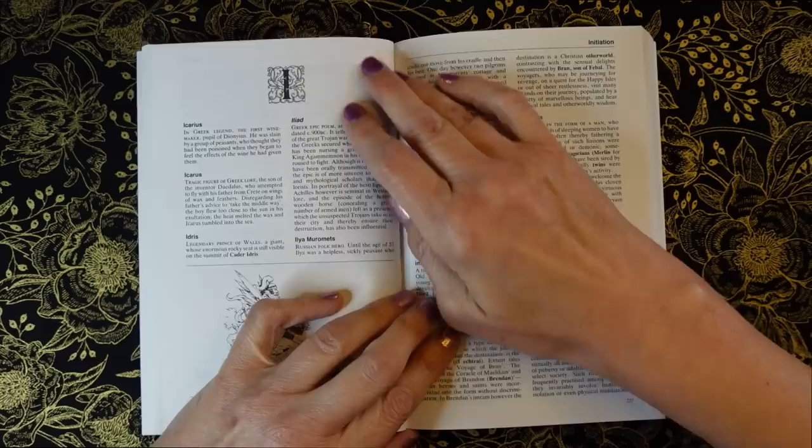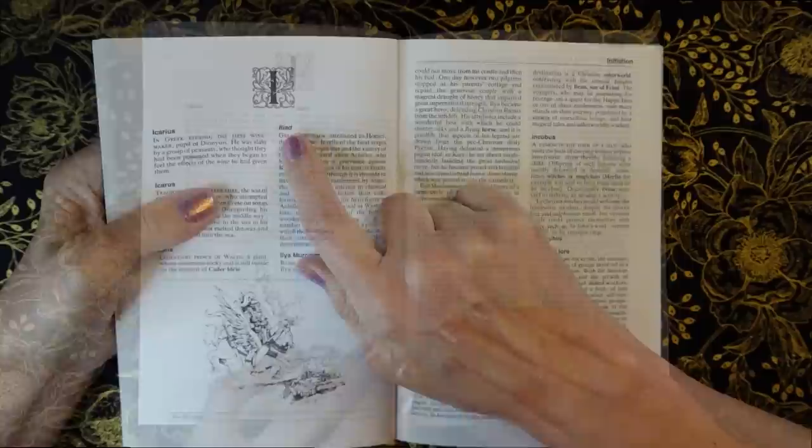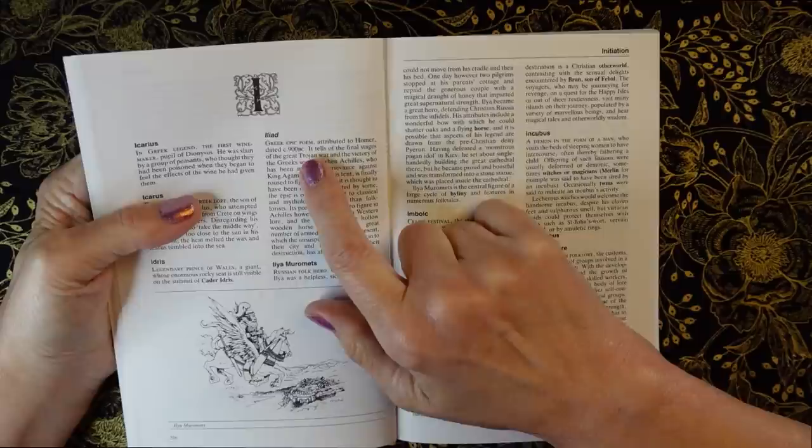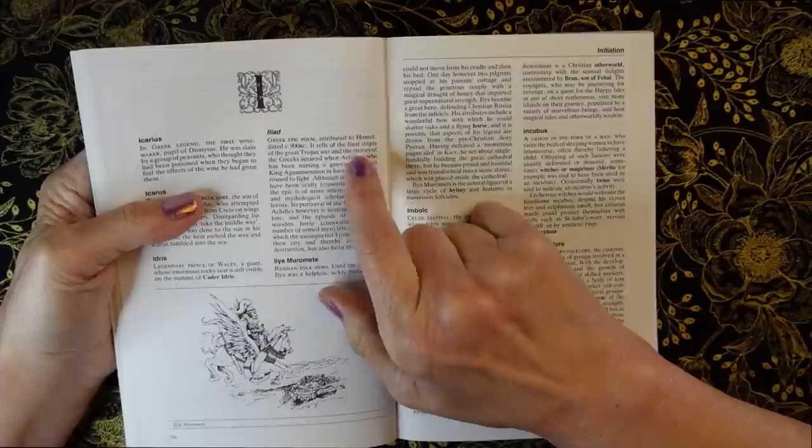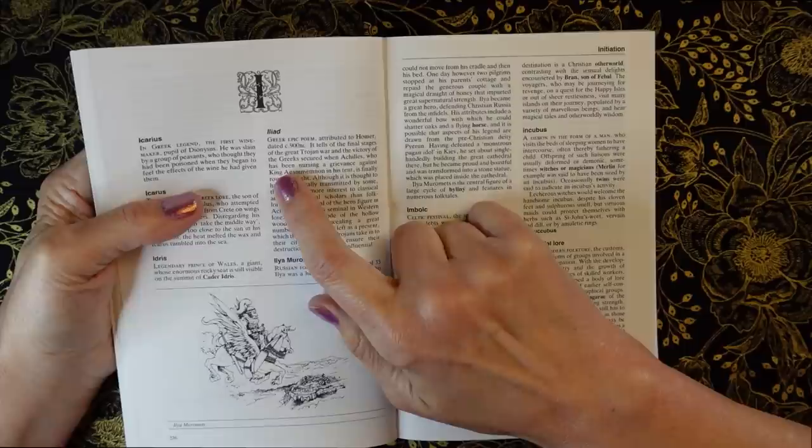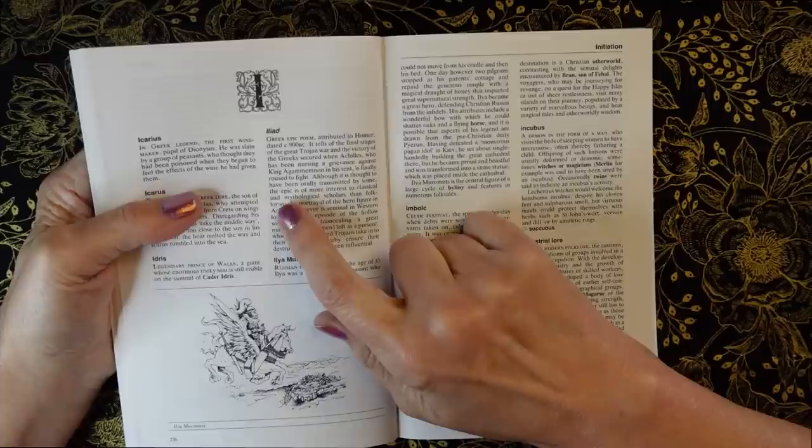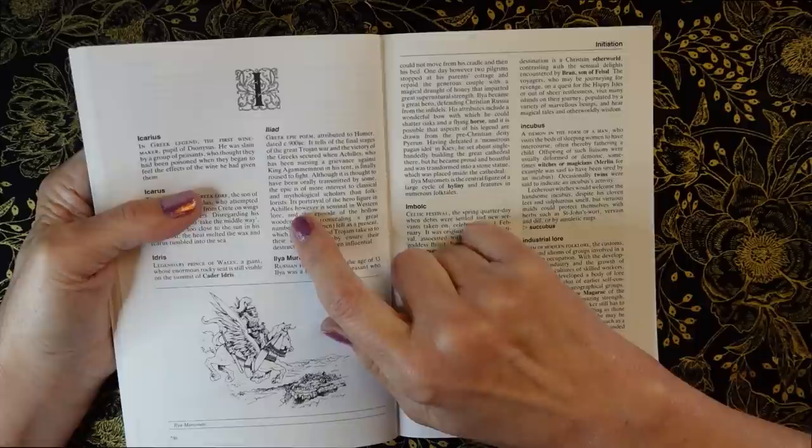Let's go to another entry. Iliad, Greek epic poem attributed to Homer, dated circa 900 BC. It tells of the final stages of the Great Trojan War and the victory of the Greeks secured when Achilles, who has been nursing a grievance against King Agamemnon in his tent, is finally roused to fight.